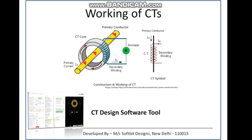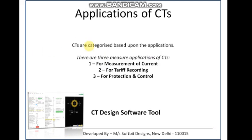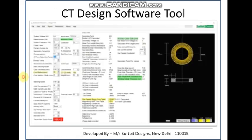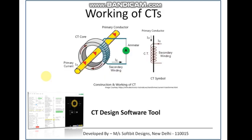Now we see the working of CT. The yellow bar you see is a primary conductor through which a heavy current is flowing, and this primary conductor is passing through a hollow CT. You can see the secondary winding, and this is the ammeter connected to measure the amount of current flowing through the primary conductor. On the right-hand side is the symbol of the CT, the current transformer.